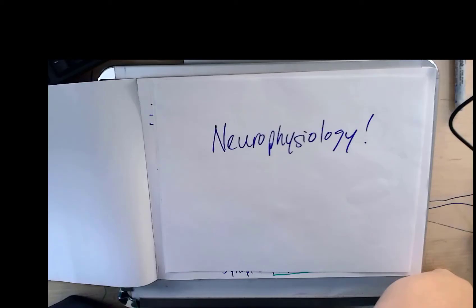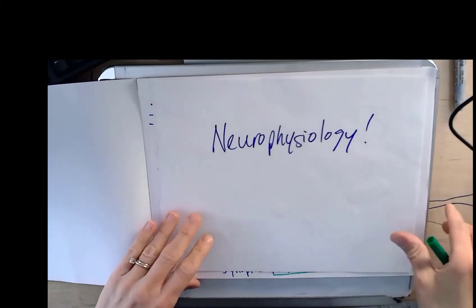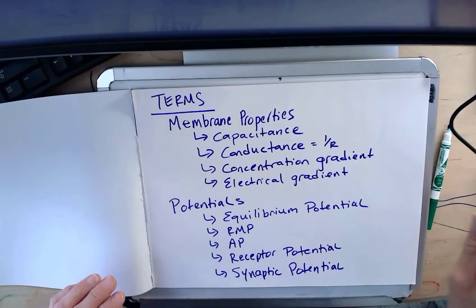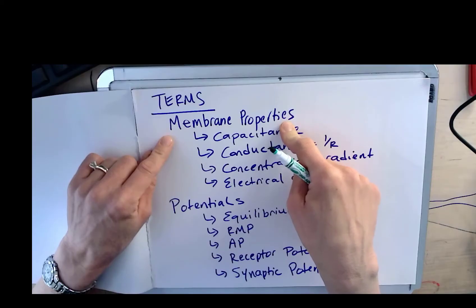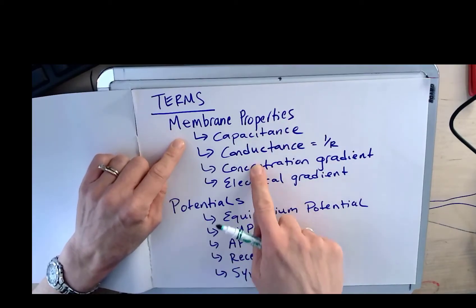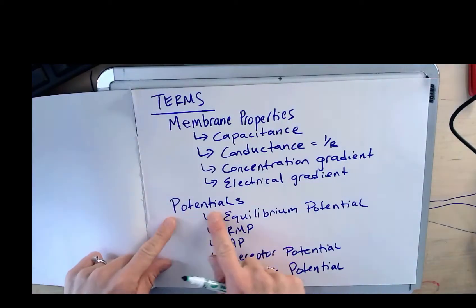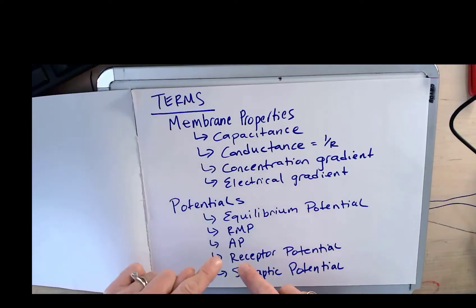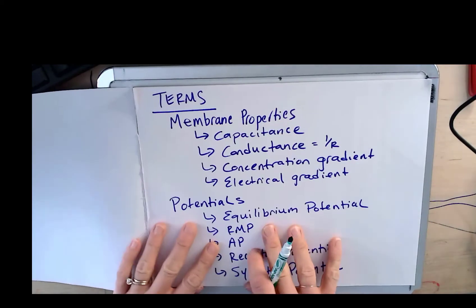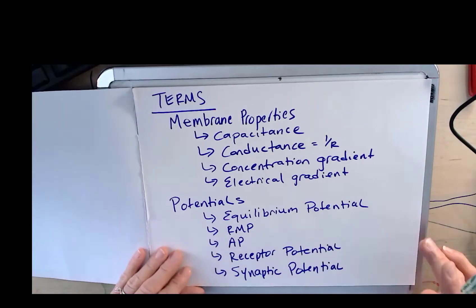We'll spend a lot of time on pharmacology, so I thought it would be appropriate to review some of the material we learned in foundational principles, which was a long time ago now. The terms I'm going to talk about: membrane properties of the neuron, capacitance, conductance, the two gradients, and then a review of all the different potentials — equilibrium potential, resting membrane potential, action potential, receptor potential, and synaptic potential. We'll come back to this term sheet and check it off one at a time.